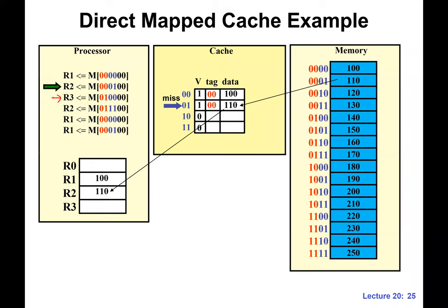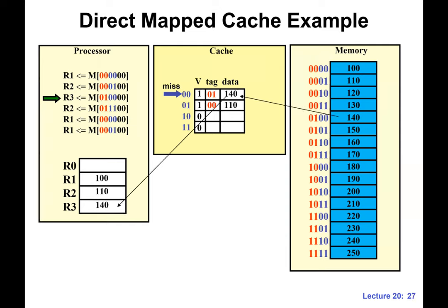The third read to R3 is also a miss — we haven't seen this memory address before. The fourth read is also a miss. Since the index bits are zero zero, we're addressing the first cache line. But it's a miss not because of the valid bit — it's a miss because of a tag mismatch. The tag in the cache is zero zero, but the tag in the memory address is zero one — that's a mismatch, so it's a miss. We evict the existing cache block and bring in the new one, with data 140 and the updated tag.